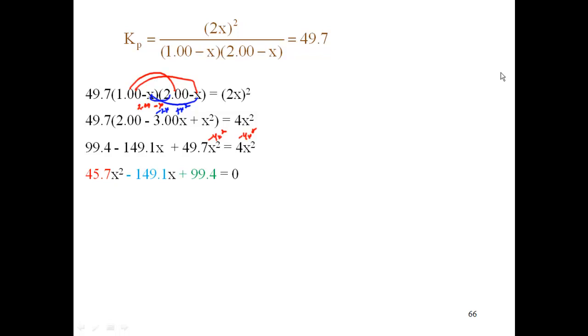Now I know my ABC. I know that my A is 45.7, my B is a negative 149.1, and my C is a positive 99.4. Realize that that A term is that coefficient in front of X², the B term is that coefficient in front of X, and the C is that coefficient that has no X term.